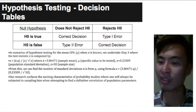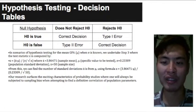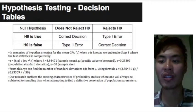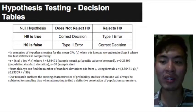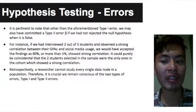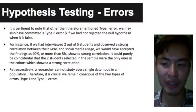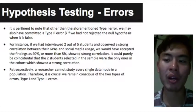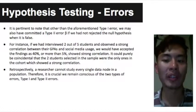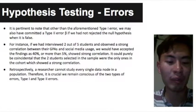Retrospectively, a researcher cannot study every single data point in a population. Therefore, it is crucial we remain conscious of the two types of errors, type 1 and type 2 errors. The following table summarizes all the decisions we could have undertaken. This concludes our statistical and inferential analysis of the correlation between a Unisim student's GPA and their usage of social media. It surfaces the characteristics of probability studies where one will always be subjected to sampling bias when attempting to find a definitive correlation of population parameters. Thank you.